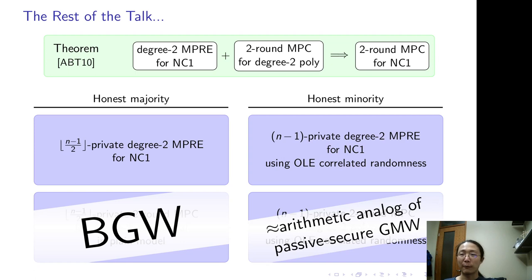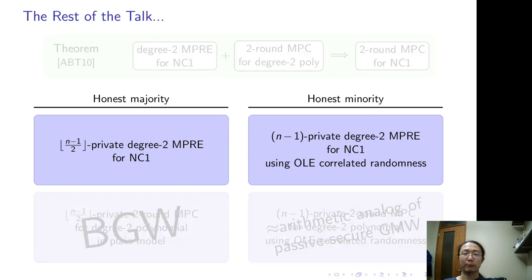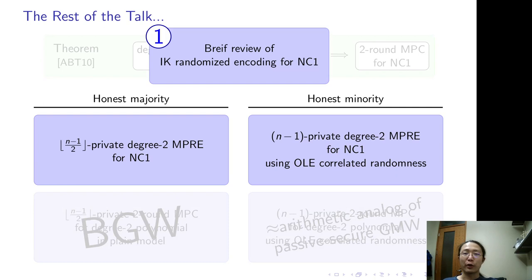So for the rest of the talk, I'm going to do the following. First, I'll briefly review the IK randomizing encoding. Then I'll present our MPRE in the plain model and in the OLE-correlated randomness model.